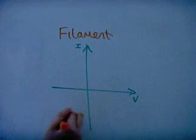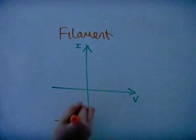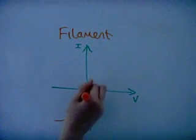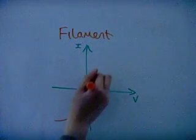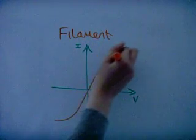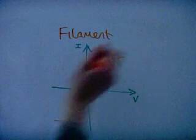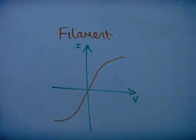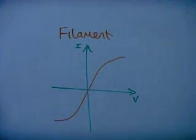In a filament bulb, the current can flow in both directions. However, when it is first switched on, the resistance is low, but over time it increases. Therefore, the current is affected. This is because the filament becomes hot.